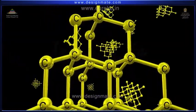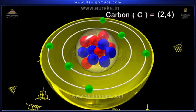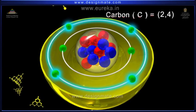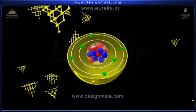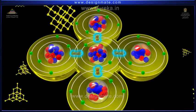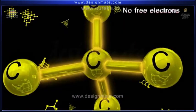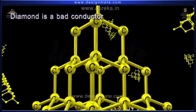In diamond, the electronic configuration of carbon is 2-4. It contains 4 electrons in its outermost orbit. It shares all the 4 electrons with 4 other carbon atoms. So there are no free electrons left in carbon atoms. Thus, diamond is a bad conductor of electricity.